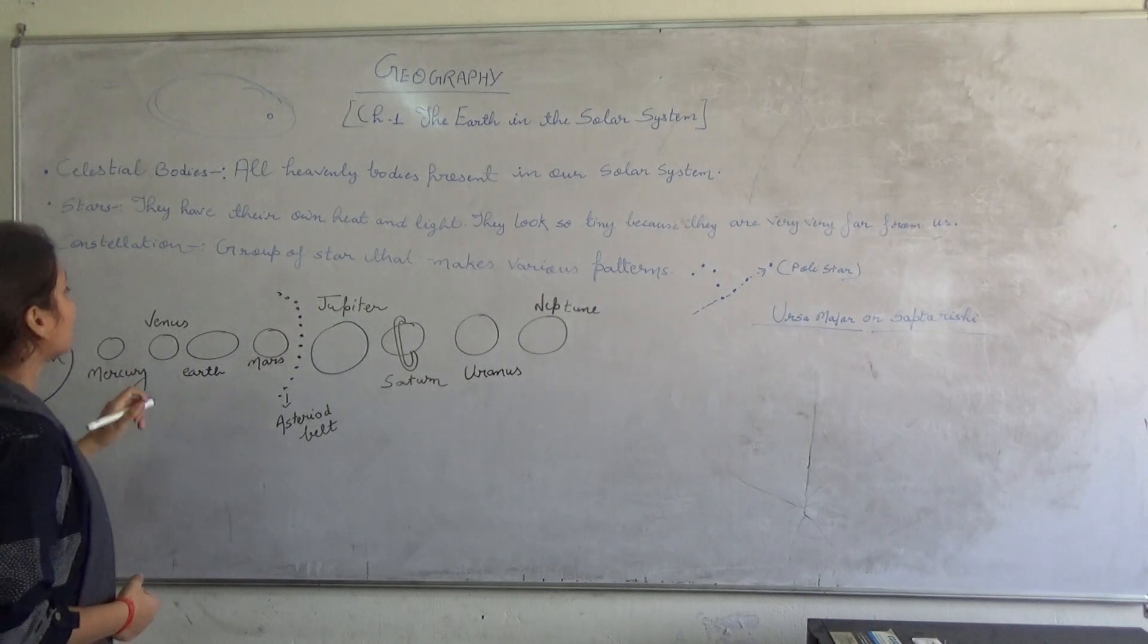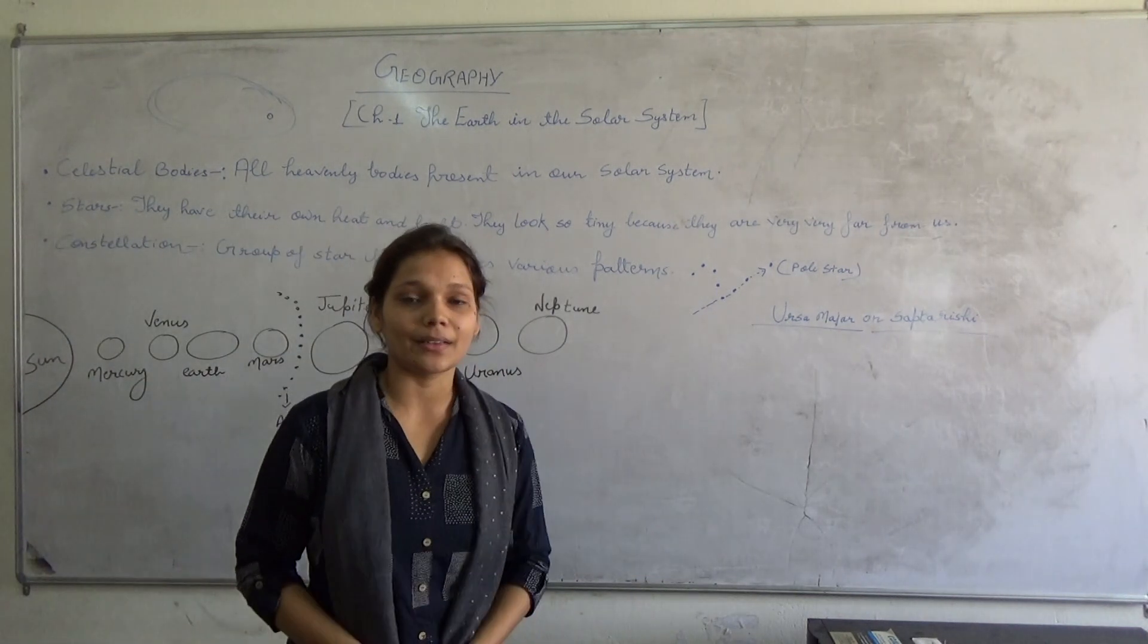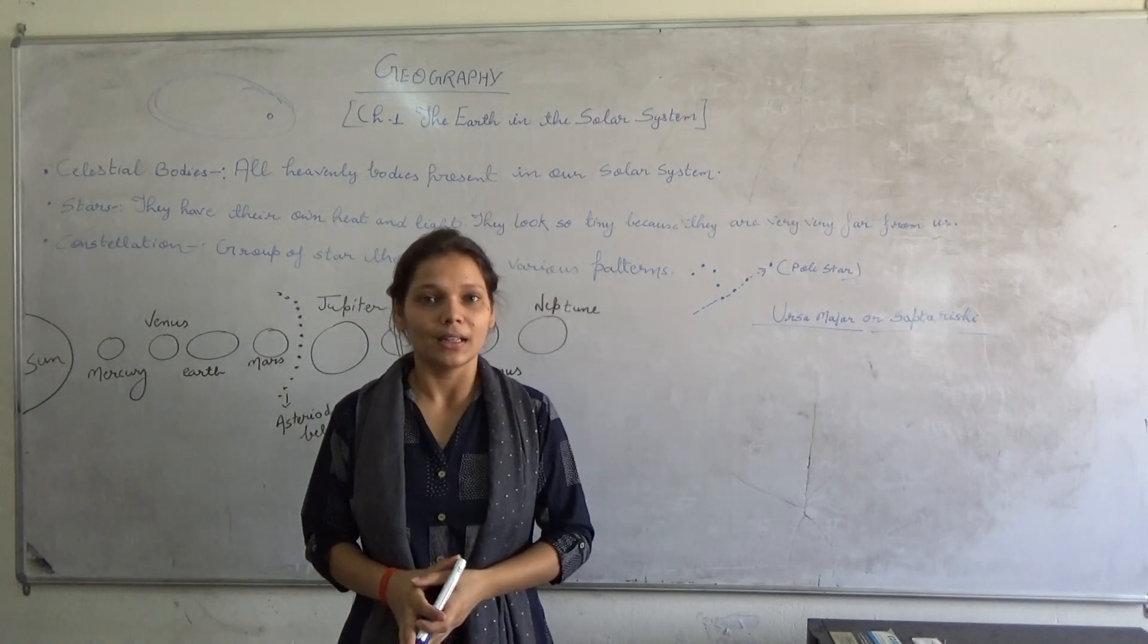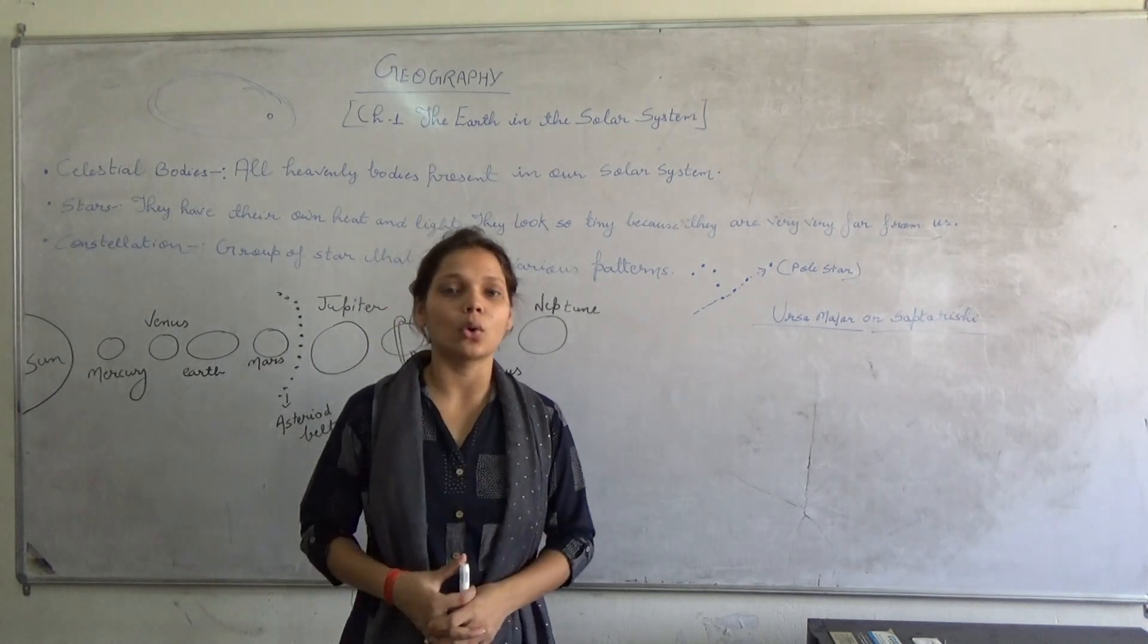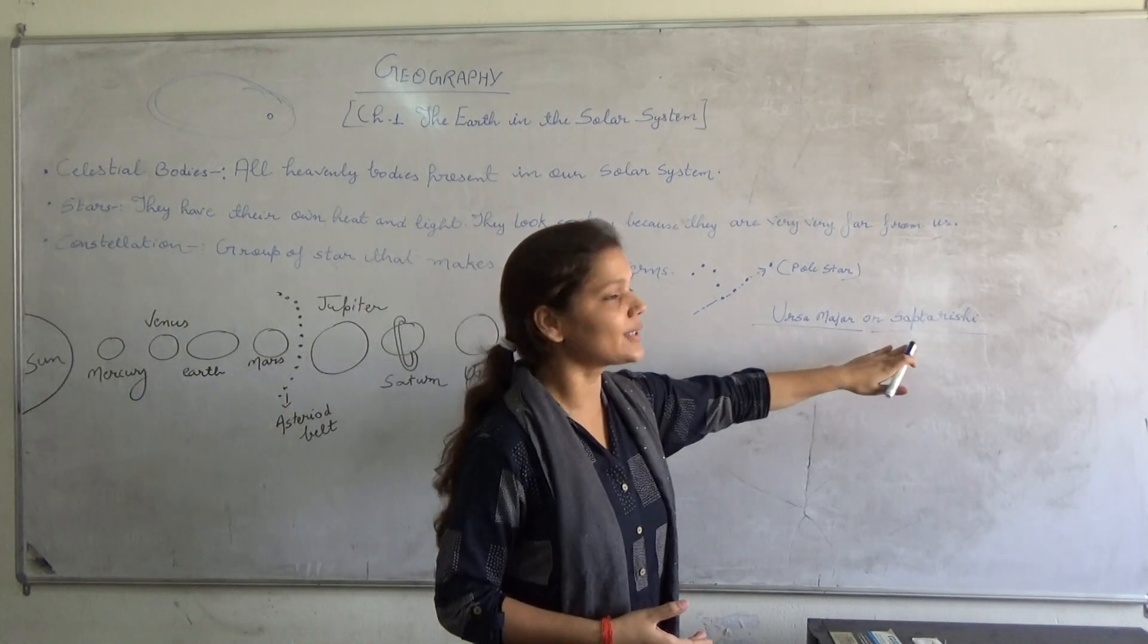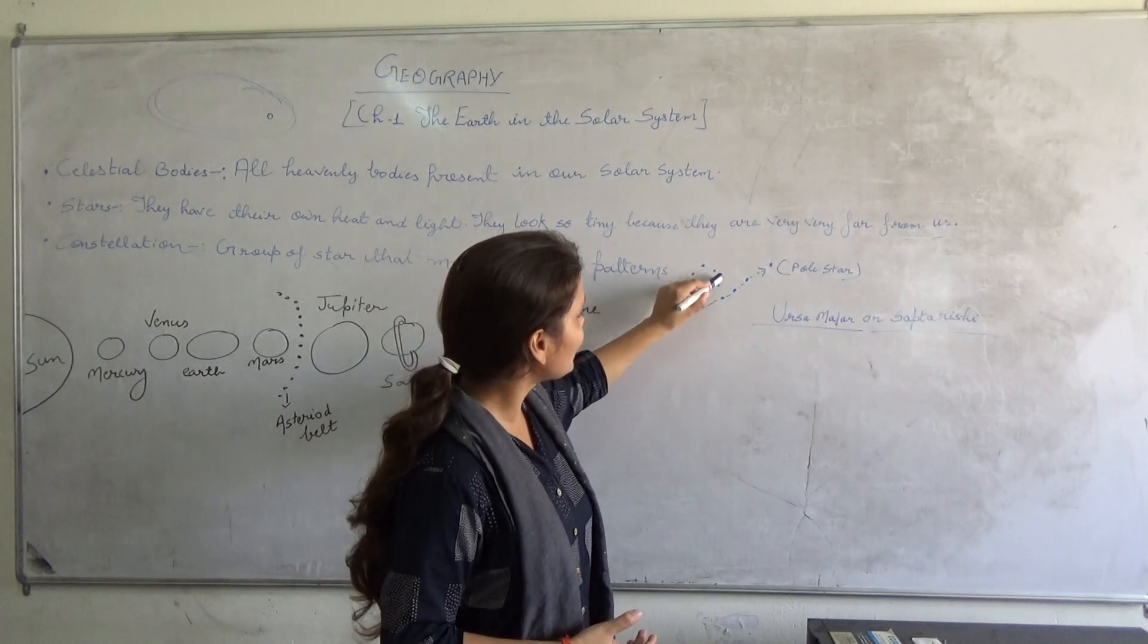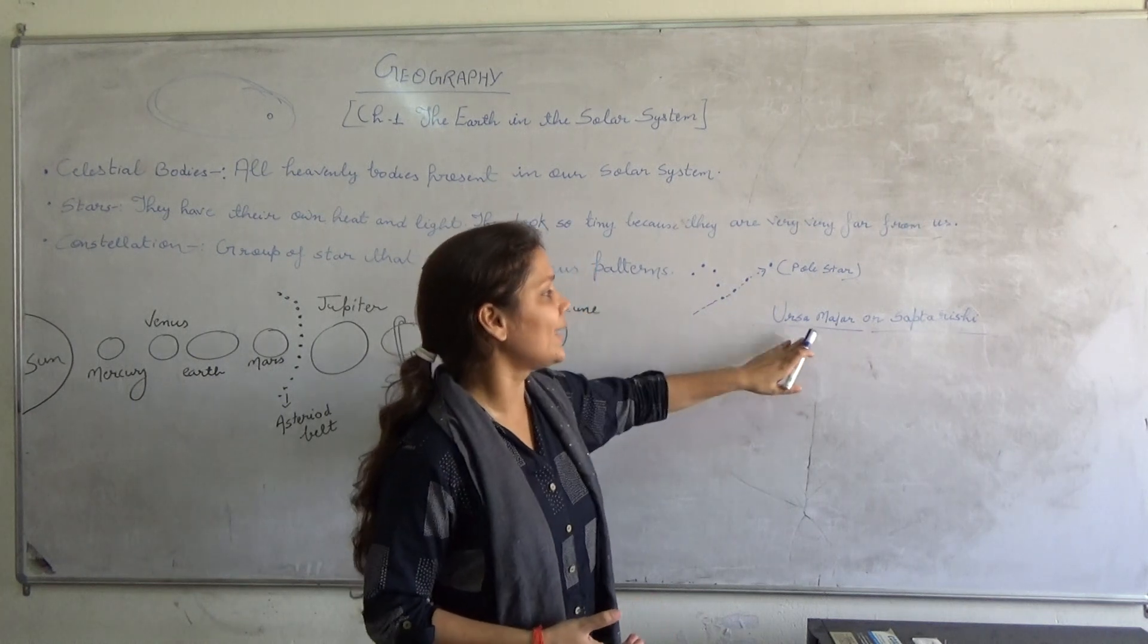Next is constellation. Constellation, a group of stars that makes various patterns. In night sky, we see that billions of stars are present. They sometimes make different patterns. These patterns are called as constellations. We have some official patterns also. One of them is Ursa Major or Saptarishi. In this group of seven stars make a pattern. This pattern is called as Ursa Major.